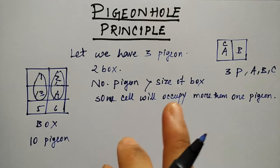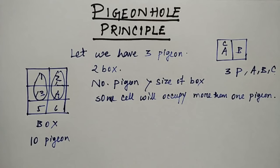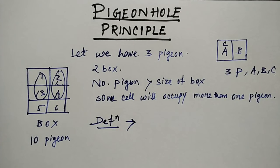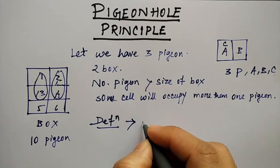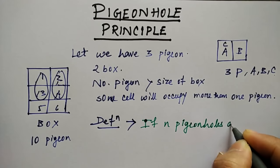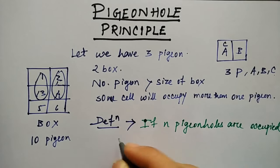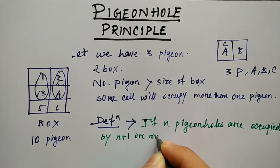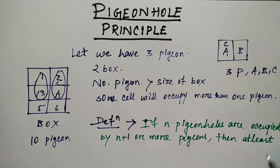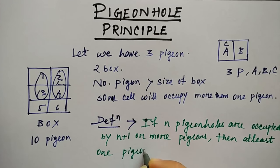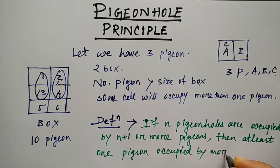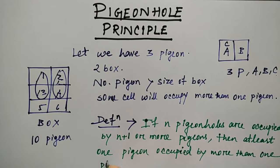This is how you accommodate pigeons into pigeon holes when the number of pigeons is more than the number of holes. The definition is: if n pigeon holes are occupied by n plus one or more pigeons, then at least one pigeon hole is occupied by more than one pigeon.